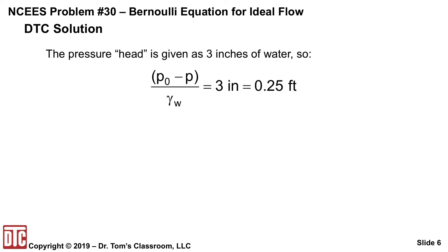You're given that the pressure head is three inches of water. What does that mean? It just means that P0 minus P over gamma of water is three inches. Convert that to feet, 0.25. Now you can solve for P0 minus P: gamma of water times 0.25. I'm going to kind of keep that as we go along here.